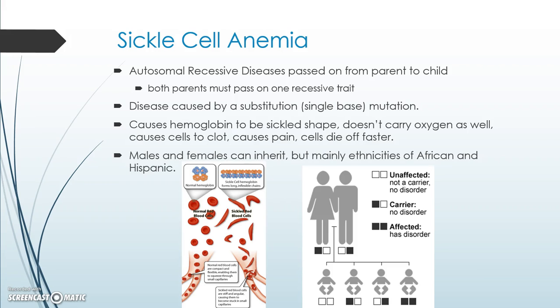This brings us to our first inherited genetic disease: sickle cell anemia. Sickle cell anemia is autosomal recessive — 'autosomal' means it doesn't matter if you're male or female; both sexes have the same chance of inheriting it. It mostly affects people of African and Hispanic ethnicity due to origins related to mosquitoes and malaria. It's a substitution mutation affecting hemoglobin shape. Importantly, if you only carry one recessive trait you're a carrier but unaffected; you must inherit the recessive trait from both parents to show the disorder.